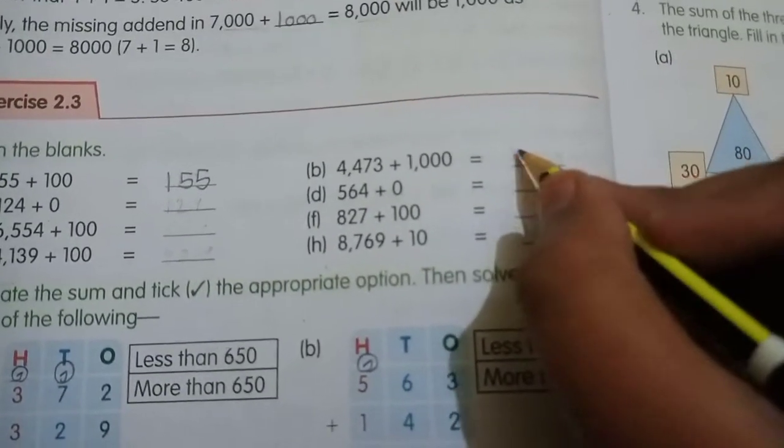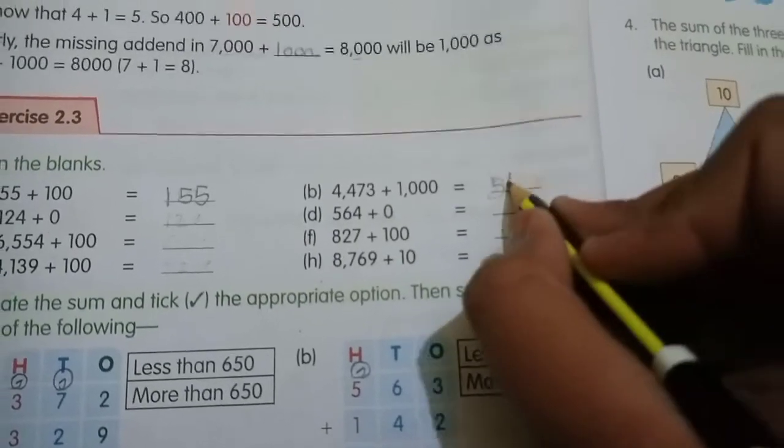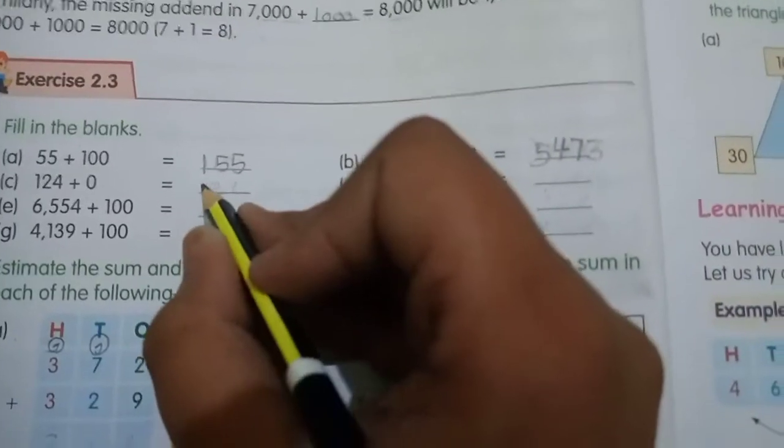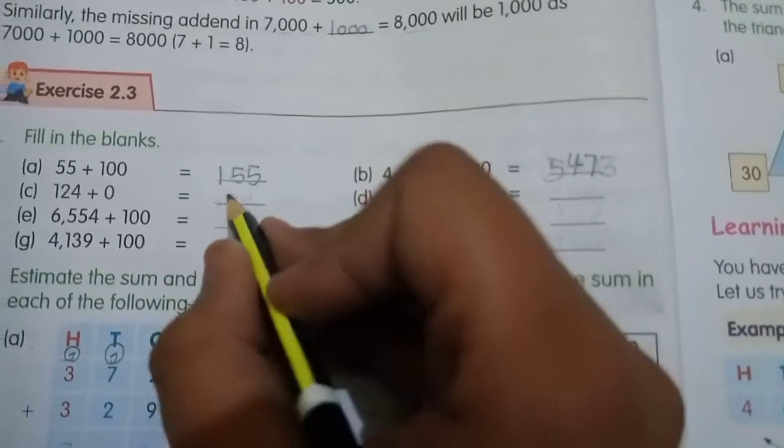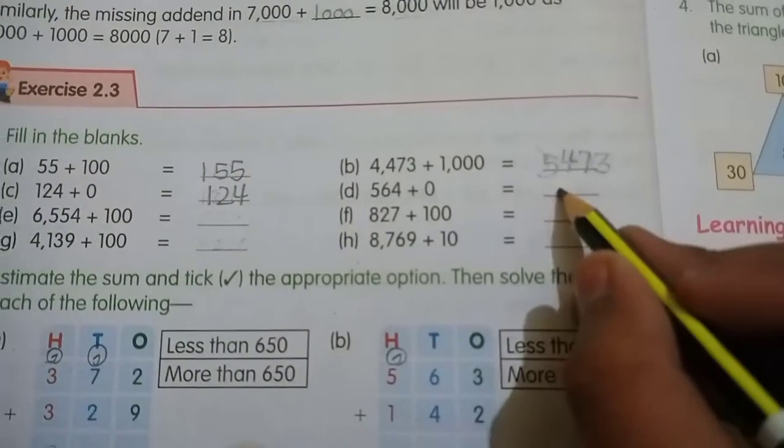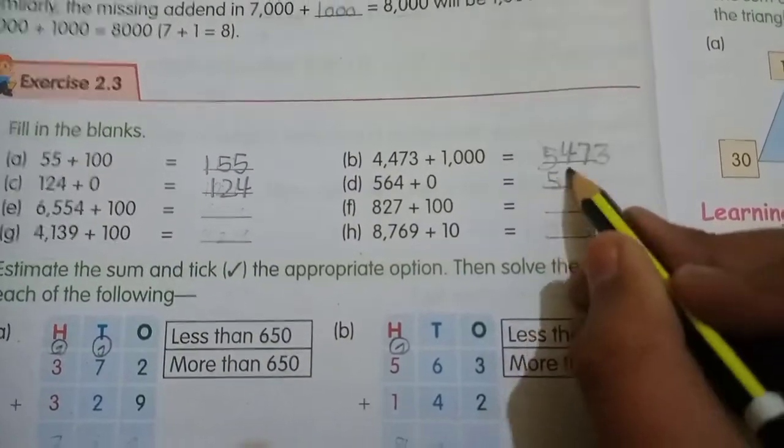5473. (c) 124 plus 0 equals 124. (d) 564 plus 0, so you have 564.